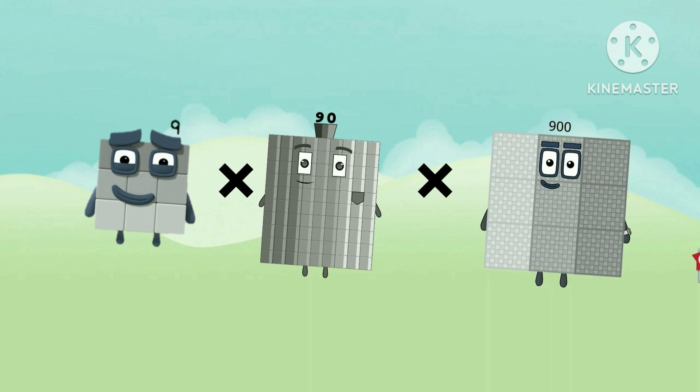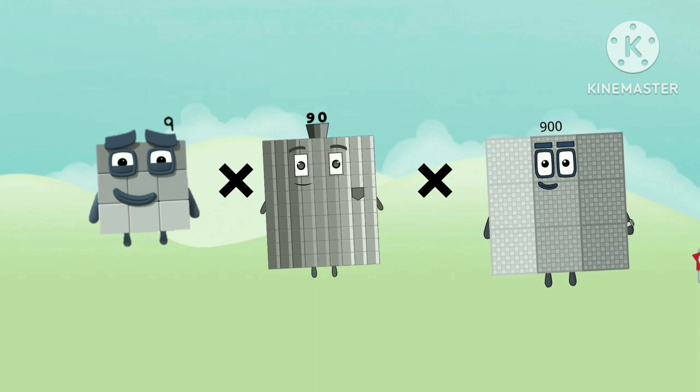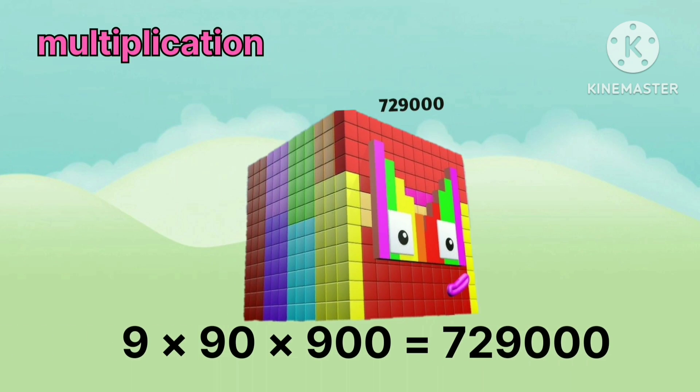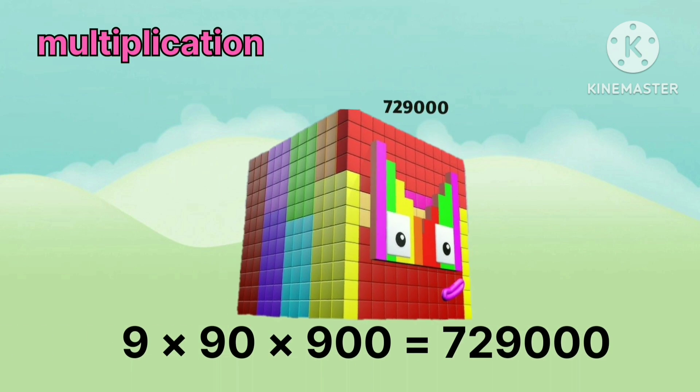9. Multiply by 90. Multiply by 900. Equals 7 lakhs 29000.